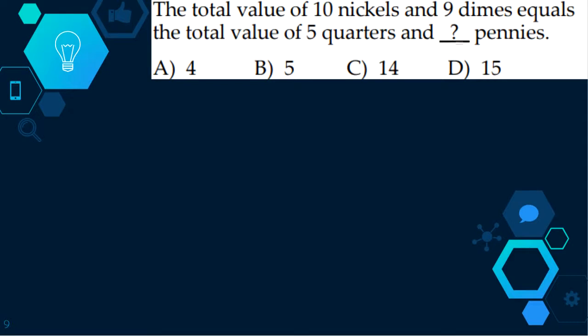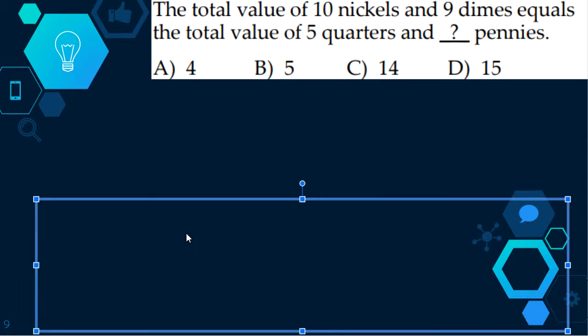The next question. The total value of ten nickels and nine dimes equals the total value of five quarters and blank pennies. Nine dimes is ninety cents, because a dime is ten cents, and nine times ten is ninety. Ten nickels is fifty cents, because a nickel is five cents, and ten times five is fifty. So you would get a dollar and forty cents with that. Because a quarter is twenty-five cents times five, which is all the quarters the person has, is a dollar twenty-five. We would do a dollar forty minus a dollar twenty-five, which is fifteen, and because a penny is one cent, it would be D, fifteen pennies.